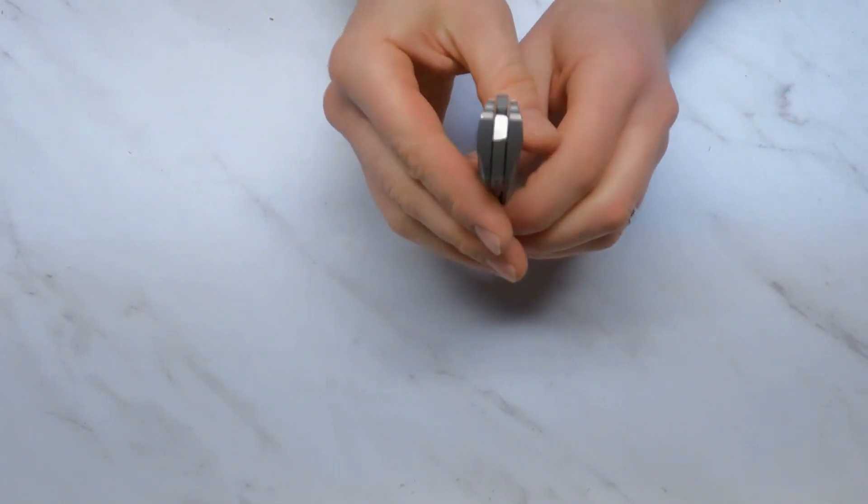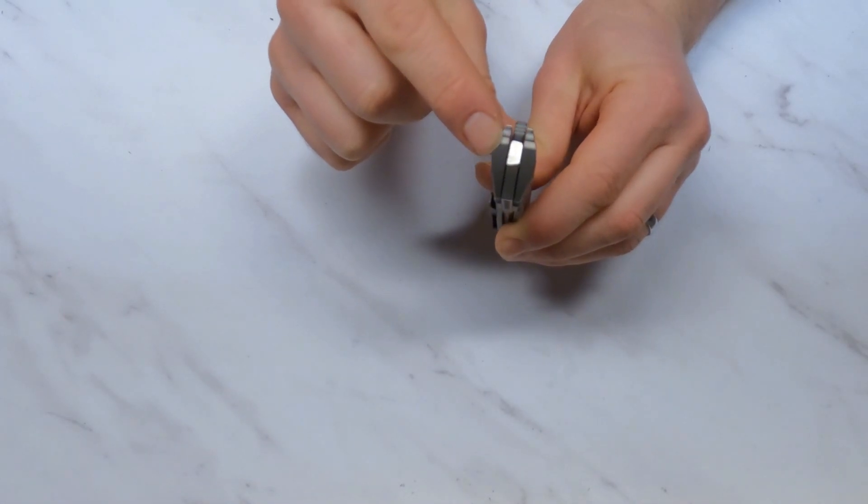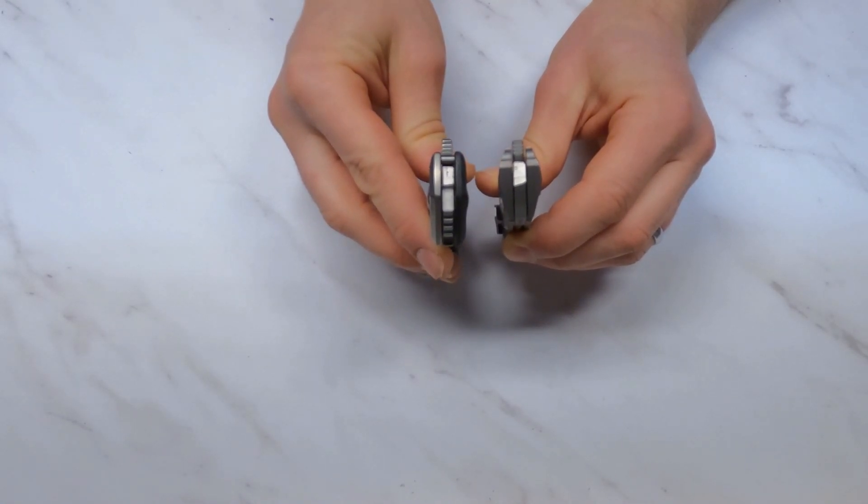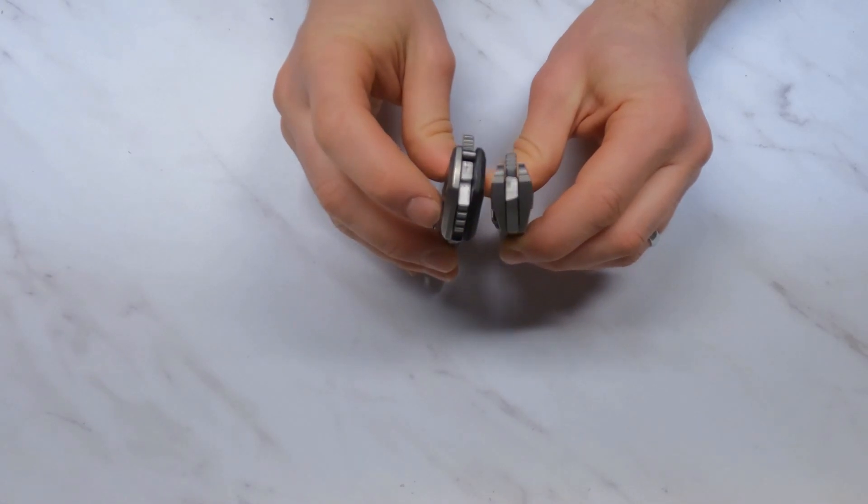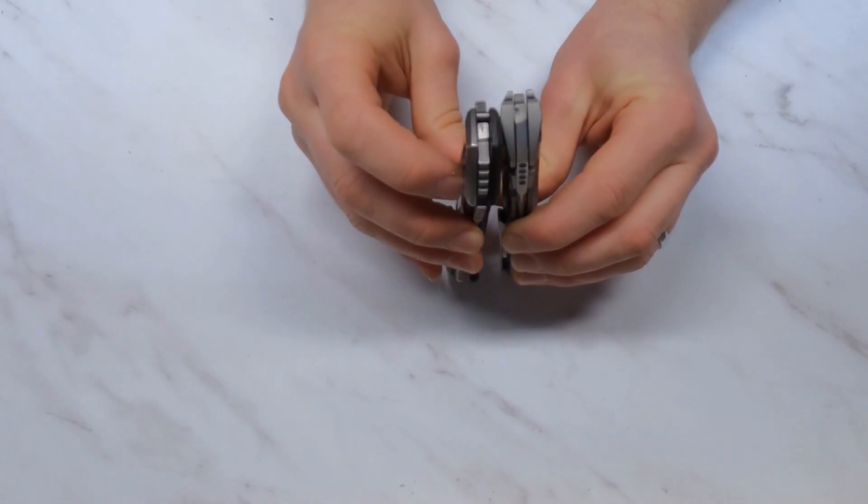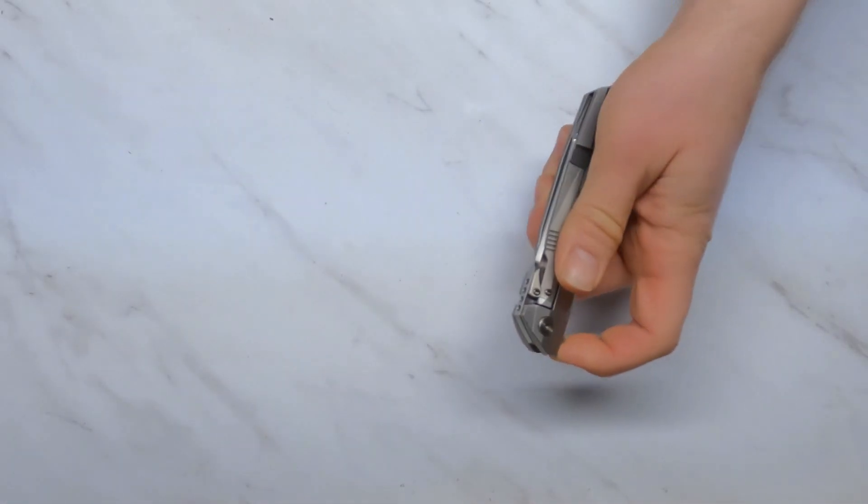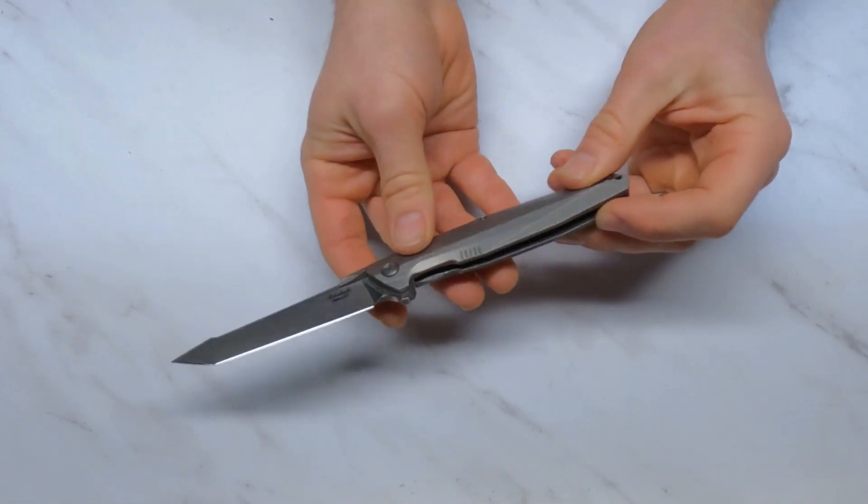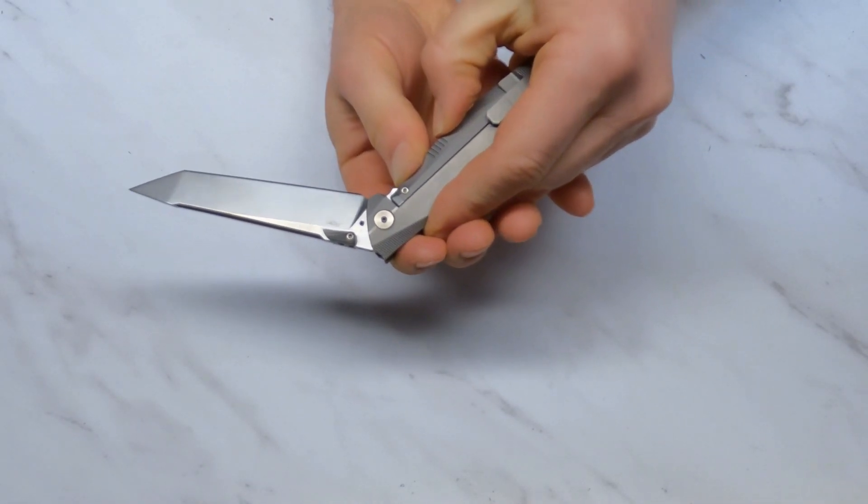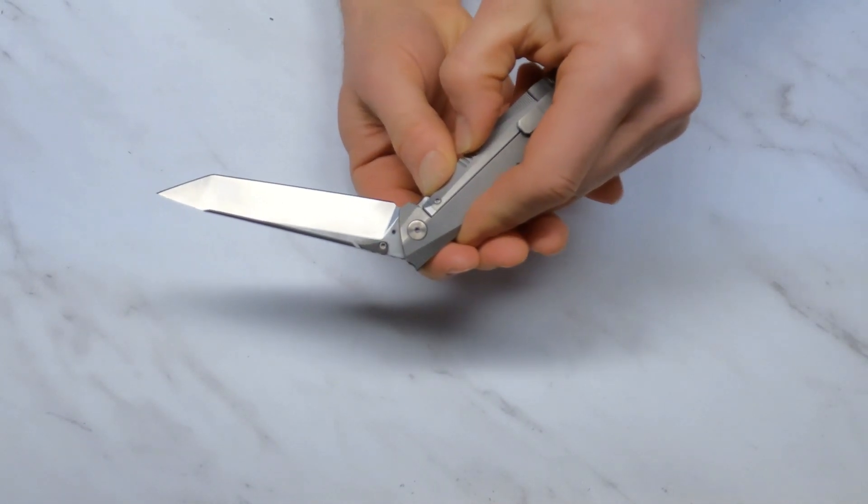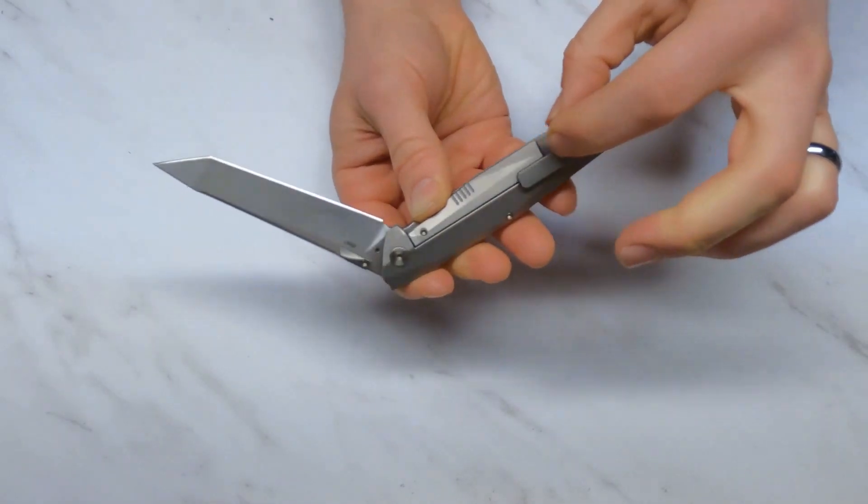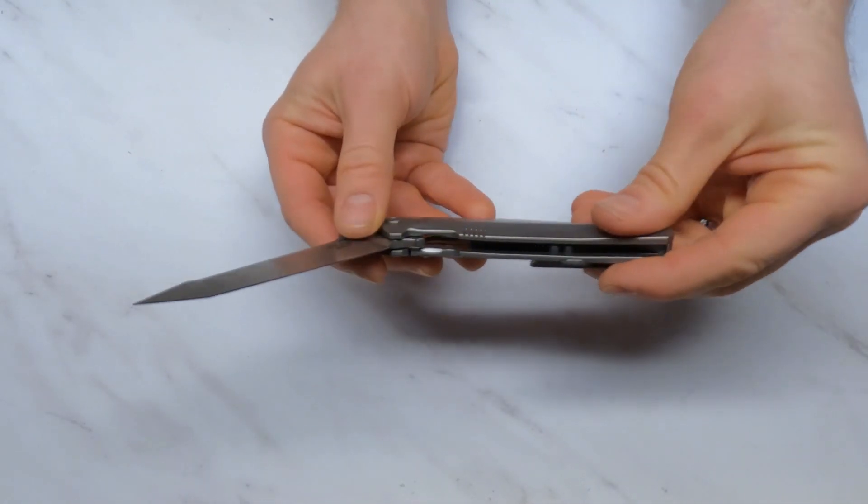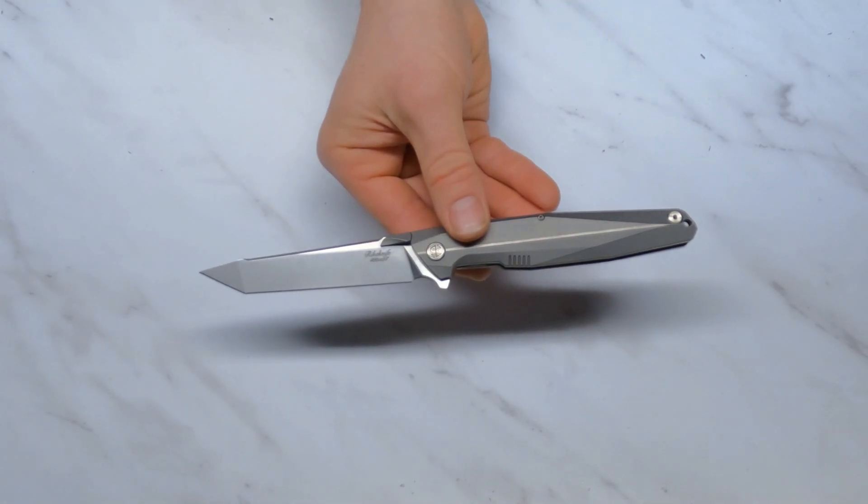One thing I want to point out on the engineering of this knife is that the lock shelf here, where the frame lock contacts the blade, is enormous. This is my 0452 Carbon Fiber, which is kind of the standard I use for a large lock shelf - you can see this one is even bigger. So this knife, despite the fact that it's a long slender knife, is set up for hard use and should last for a long time. The frame lock is also pretty stiff. It doesn't have a lot of flex to it even with two thumbs. They've left a lot of titanium there at the bottom so it's very thick and very sturdy.